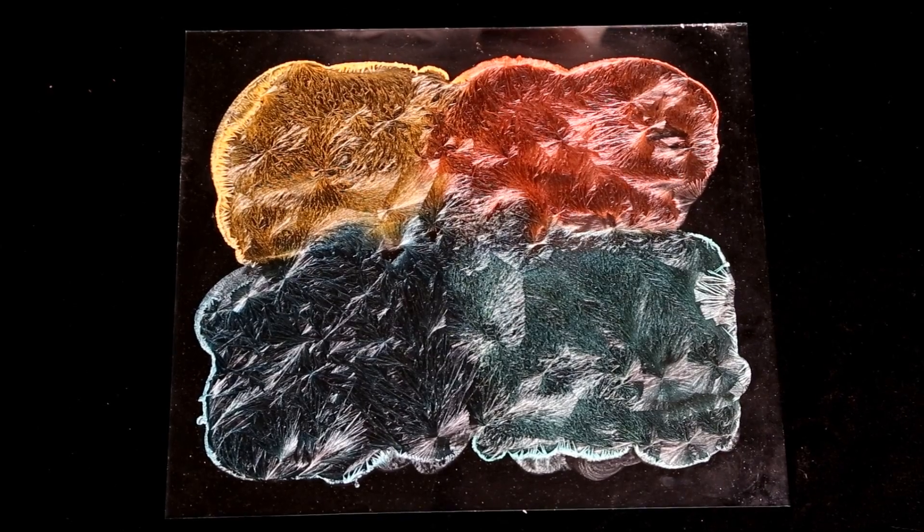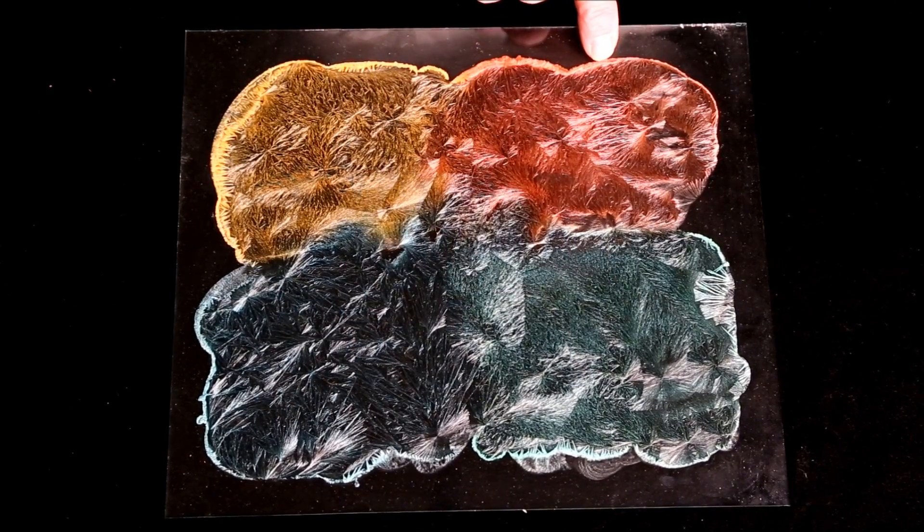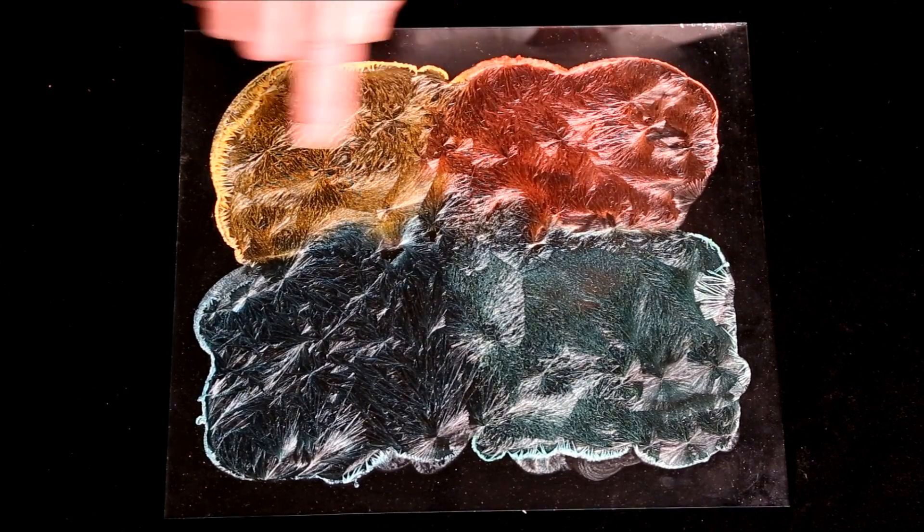You can even do multiple colors. Each blotch here is about one quarter teaspoon of dyed Epsom salt solution spread around in a circle.